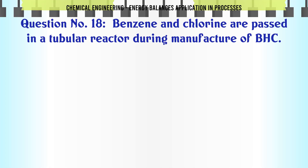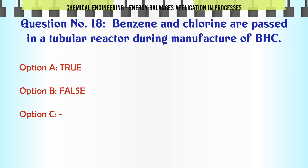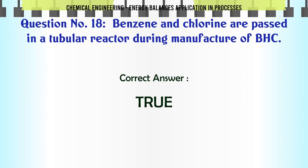Benzene and chlorine are passed in a tubular reactor during manufacture of BHC. A: True. B: (other options). The correct answer is true.